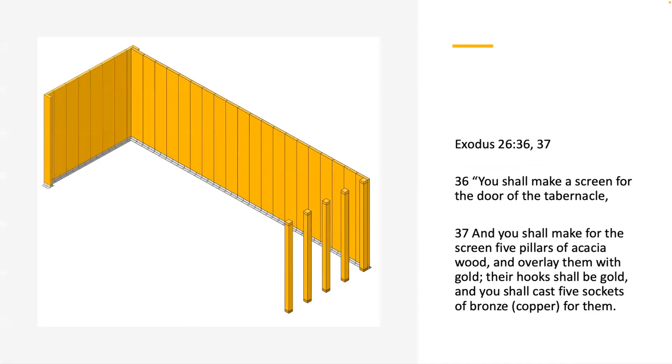Exodus 26:36-37: 'You shall make a screen for the door of the tabernacle. And you shall make for the screen five pillars of acacia wood and overlay them with gold. Their hooks shall be gold and you shall cast five sockets of bronze or copper for them.'